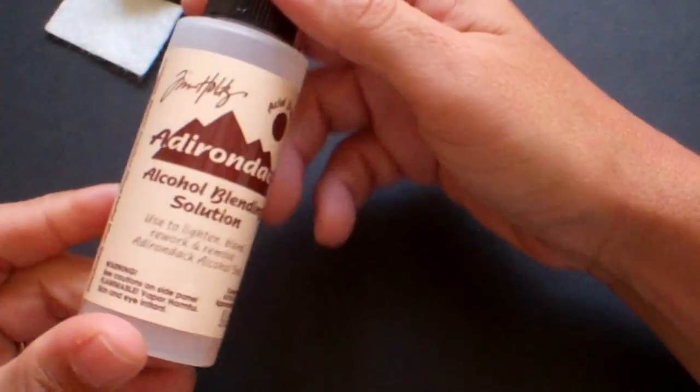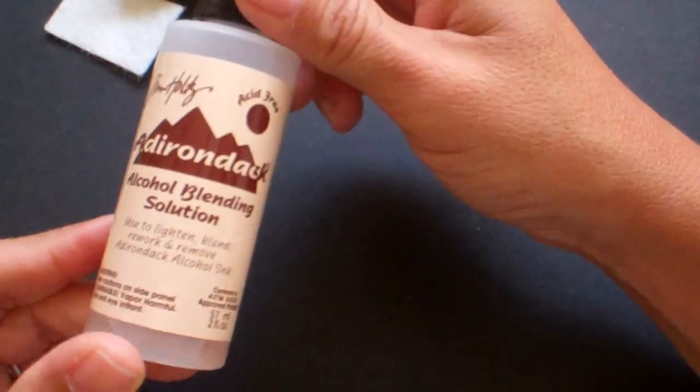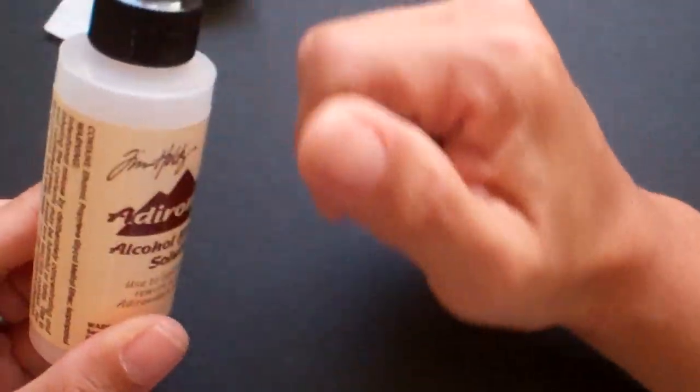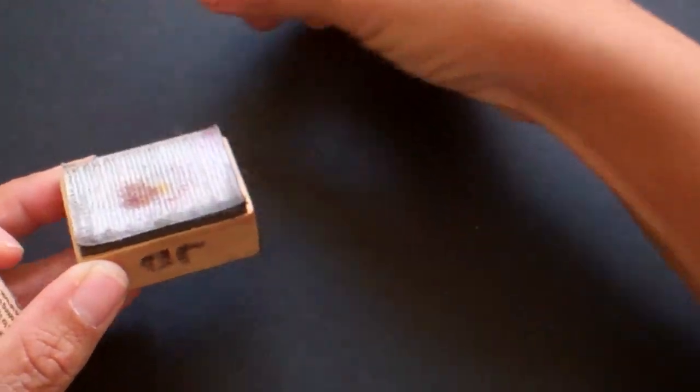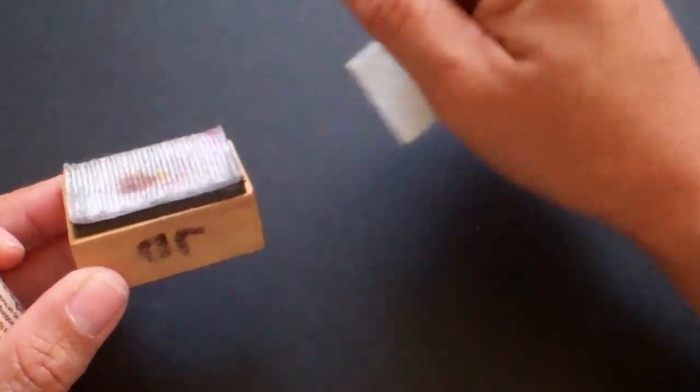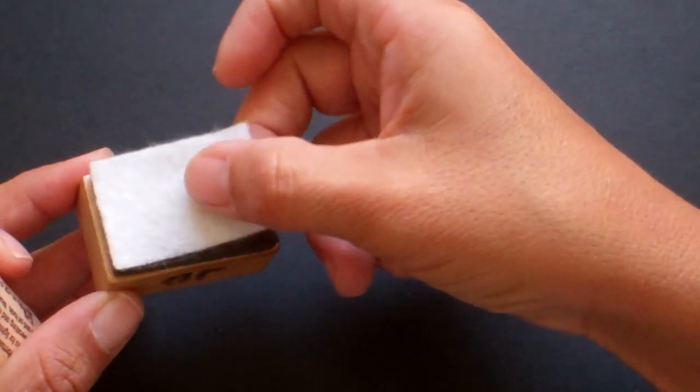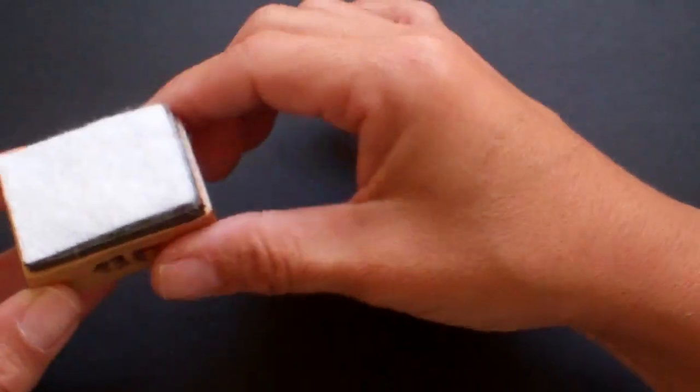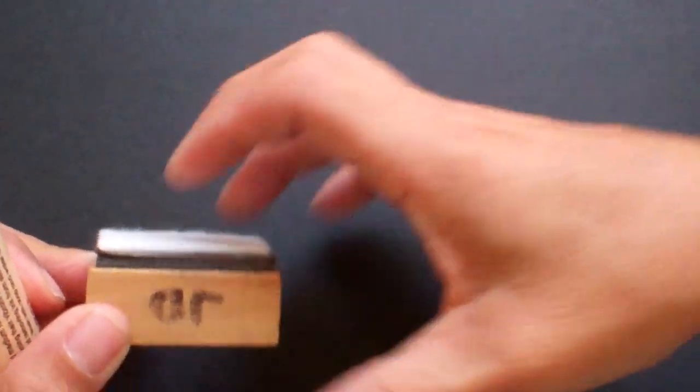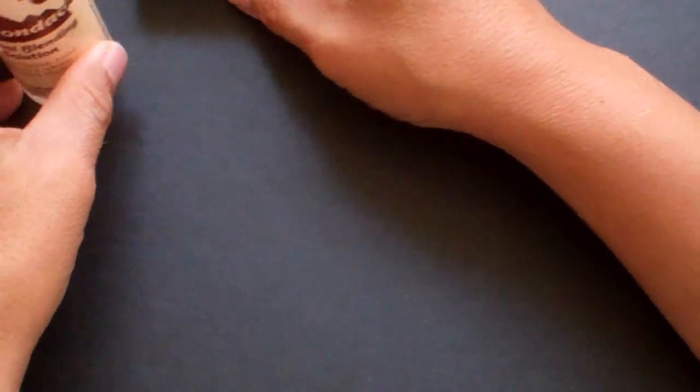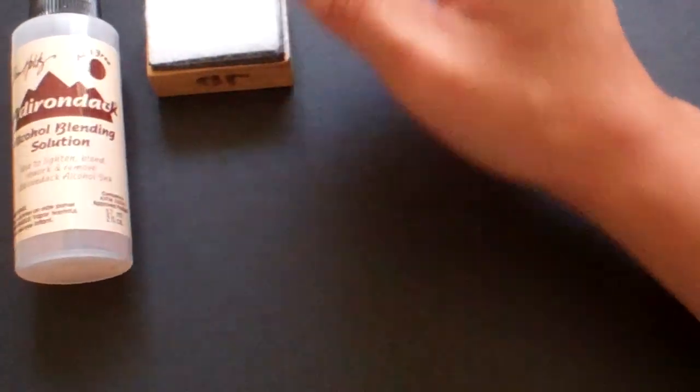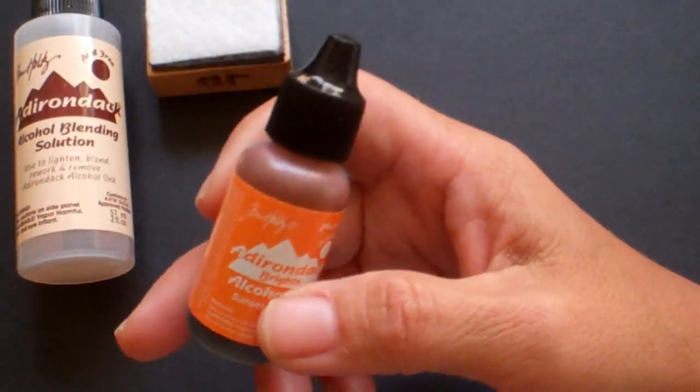I was very happy with the result. So let me tell you what you need to do alcohol inking. You need Adirondack alcohol blending solution. These things are all found in the same area at Michael's. You need a blending tool. It's basically the same tool that you use for distress inks, but instead of putting a foam applicator pad, you put one of these felt pieces. They come in a pack with lots and lots of them.